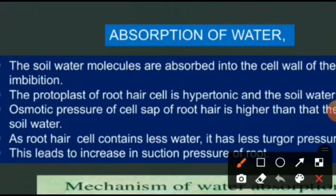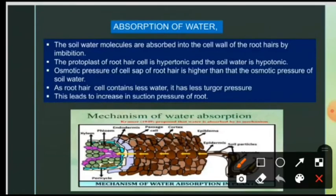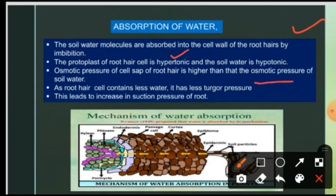So how does the absorption of water take place? Soil water molecules are absorbed into the cell wall by imbibition. We studied imbibition — how water is absorbed without forming a solution. The soil water molecules are absorbed by imbibition into the cell wall of the root hairs. The protoplast of the root hairs is hypertonic — its osmotic concentration is higher as compared to the soil water, which is hypotonic. Since the root hair cell is hypertonic and the soil water is hypotonic, water movement is from the hypotonic to the hypertonic solution. The osmotic pressure of the cell sap of the root hair is higher than the osmotic pressure of the soil water.